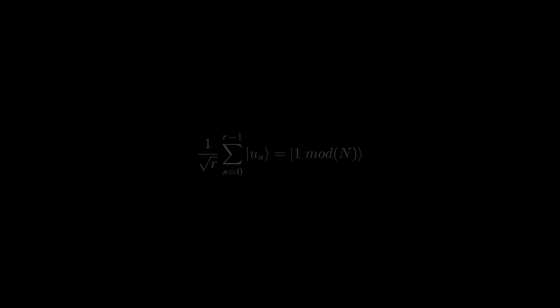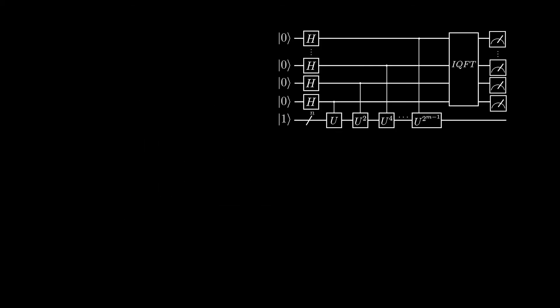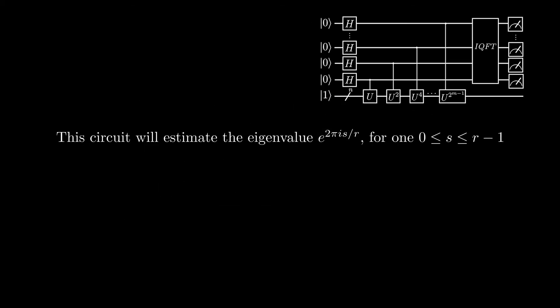Here is the circuit for the algorithm. Looking at it, this is just the quantum phase estimation circuit. As you can see, we now know that 1 is an eigenvector of the U gate, so we are using this to estimate the eigenvalue e to the power of 2 pi i s over r, where s is an integer from 0 to r minus 1.